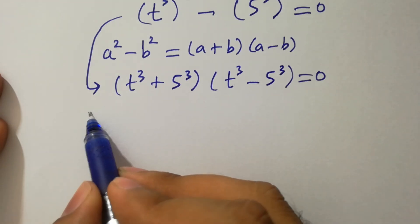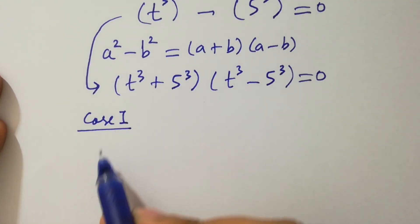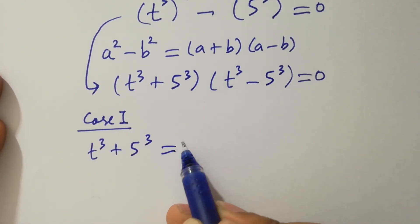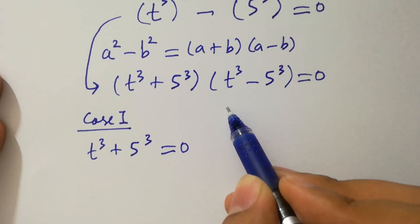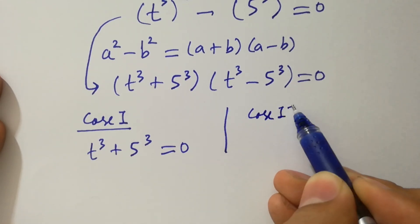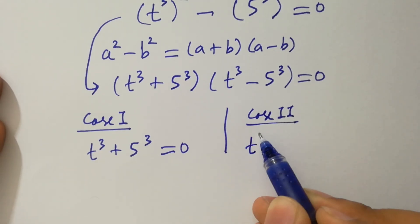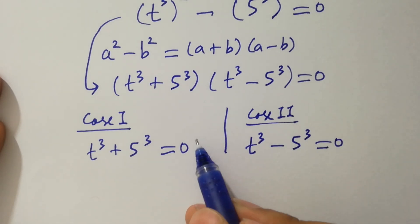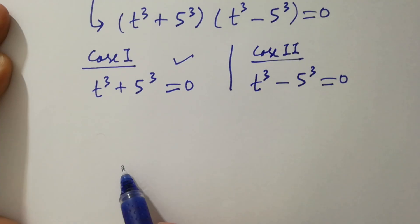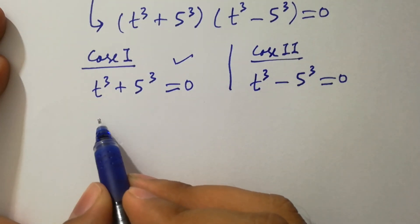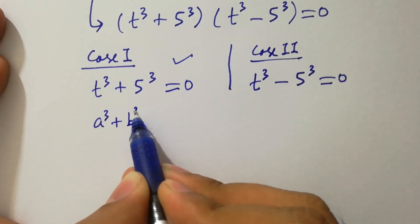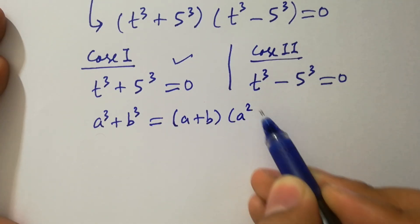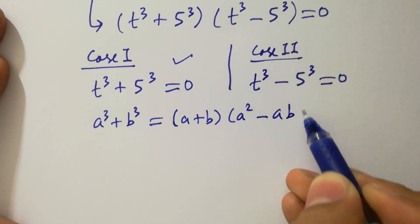Case 1 is t³ + 5³ = 0, and Case 2 is t³ − 5³ = 0. Taking Case 1 first, we know the formula of a³ + b³, which equals (a + b)(a² − ab + b²).